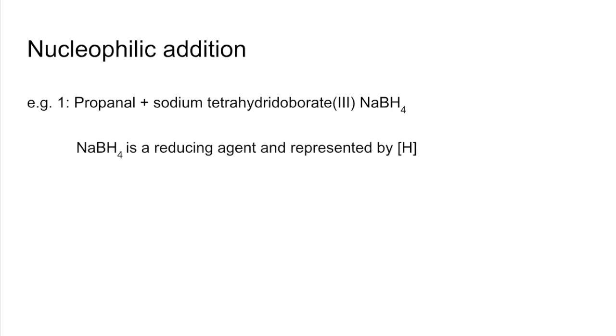The second mechanism is nucleophilic addition. We have three examples. First is propanal with sodium tetrahydridoborate(III) NaBH4. NaBH4 is a reducing agent represented in the reaction by [H]. For this example we take the propanal, react it with two moles of reducing agent, and get a primary alcohol - propan-1-ol.